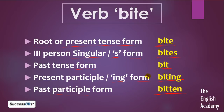Let us sum it up once again. Root yaa phir present tense form hai bite. Third person singular yaa phir s-form hai bites. In the past tense form it becomes bit. Present participle aur ing form is biting. And past participle form is bitten.